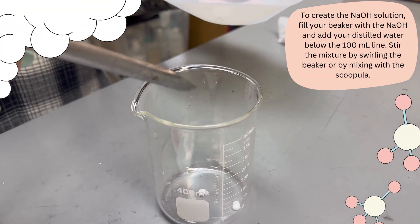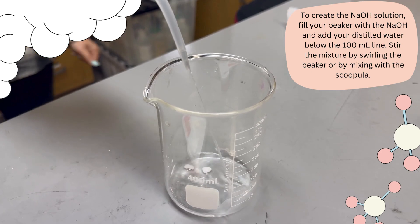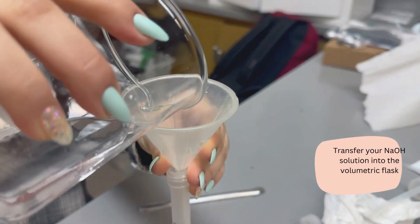To create your NaOH solution, make sure you put in 100 milliliters of distilled water and your 0.4 grams of NaOH. Then stir until dissolved.